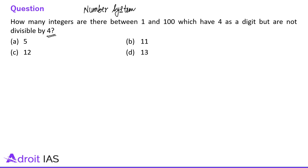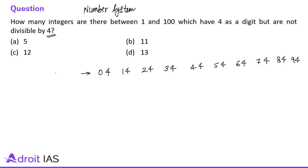Numbers from 1 to 100 that have 4 as a digit in the units place: 4, 14, 24, 34, 44, 54, 64, 74, 84, and 94 — that's 10 numbers, since the tens digit goes from 0 through 9. Then numbers with 4 in the tens place: 40, 41, 42, 43, 44, 45, 46, 47, 48, and 49 — again 10 numbers.